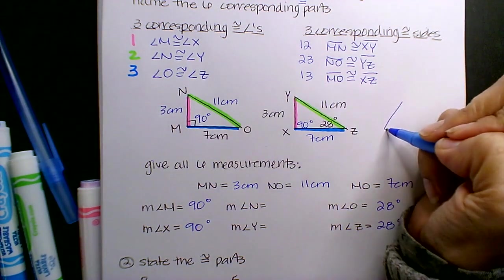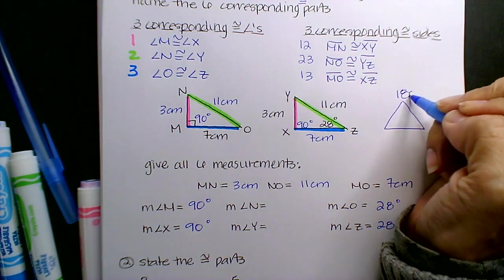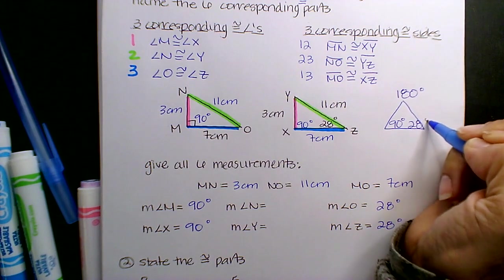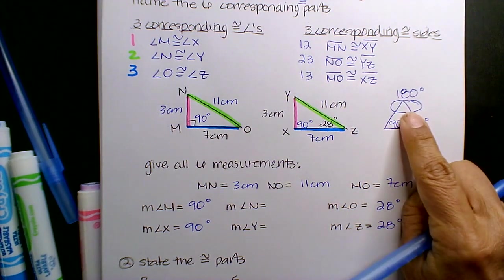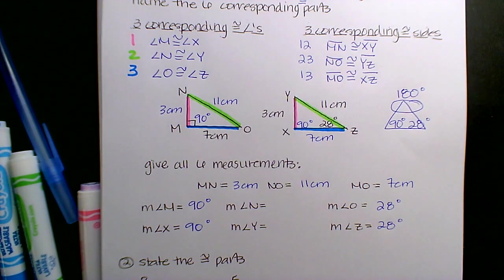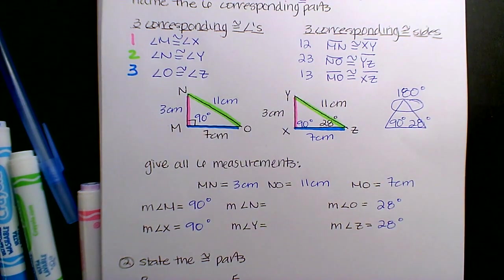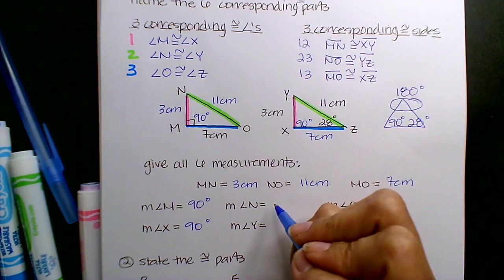So if all triangles add up to 180 degrees, and this is 90, and this is 28, you can very easily find that third angle by the triangle sum theorem, which we did yesterday with our interior angles. So what's the degree of N and Y? 62. Very good.